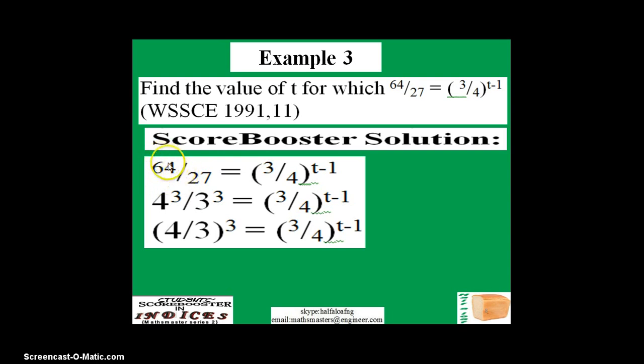64 is the same as 4 raised to power 3 and 27 is the same as 3 raised to power 3. Now we have same exponents here, so we can put 4 over 3 in brackets and everything raised to power 3.